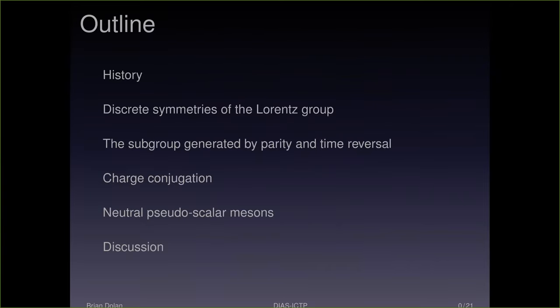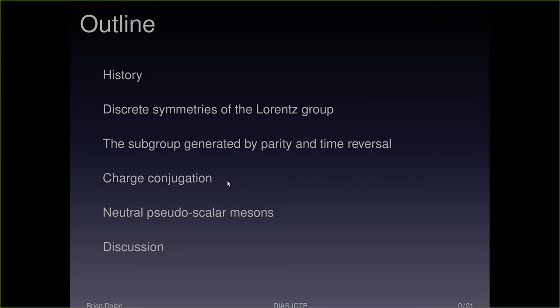I'll start off with a little bit of history about parity, charge conjugation, and time reversal. Then I'll discuss the way discrete symmetries of the Lorentz group are implemented. What I really want to get at is the question: what's the subgroup generated by parity and time reversal? They are discrete elements of the Lorentz group, so their repeated application will generate a discrete group. When we include charge conjugation, things are brought down to a more manageable situation. If I have time, I'll discuss some applications to neutral pseudoscalar mesons.